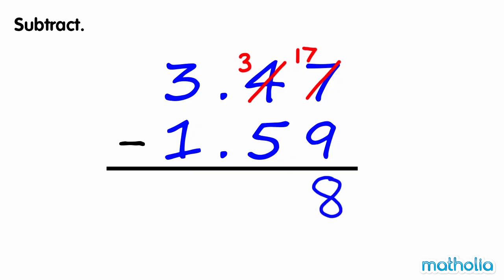Subtract the tenths. We cannot subtract 5 tenths from 3 tenths, so we regroup 1 one into 10 tenths. We now have 13 tenths. 13 tenths minus 5 tenths equals 8 tenths. Write the decimal point.